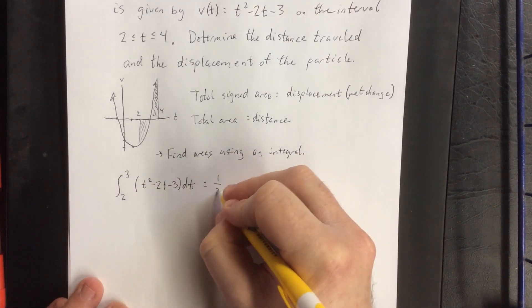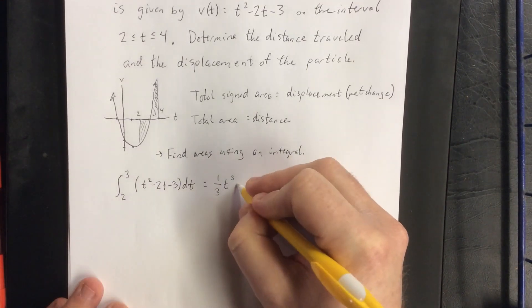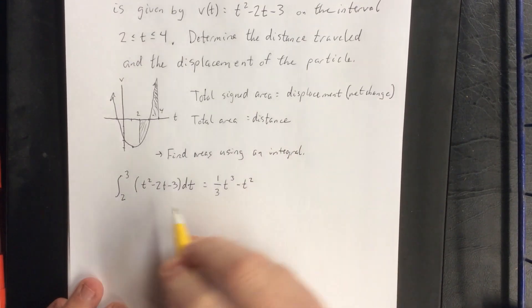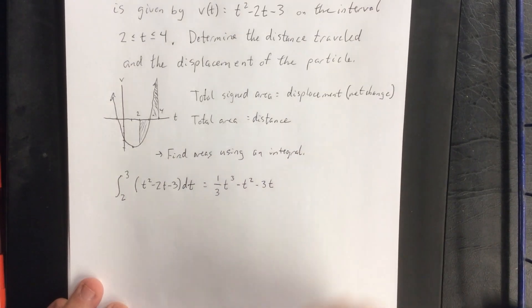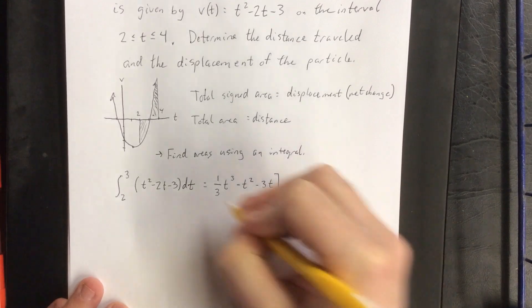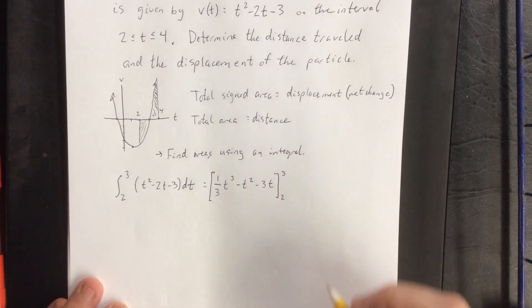Antiderivative of t² will be ⅓t³, antiderivative of -2t will be -t², and the antiderivative of -3 will be -3t. I'll be plugging in bounds of 2 and 3 to this expression.